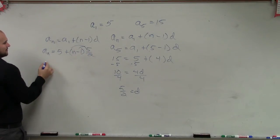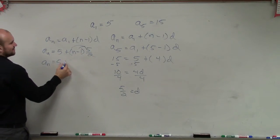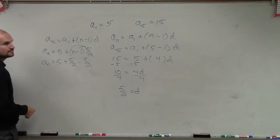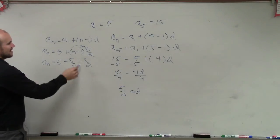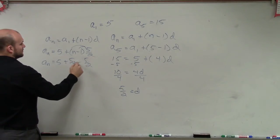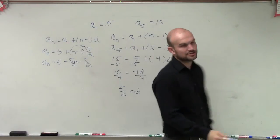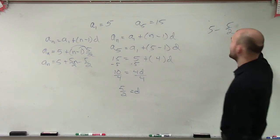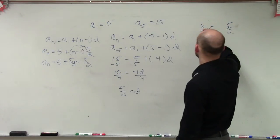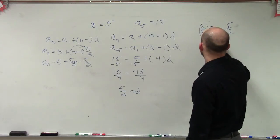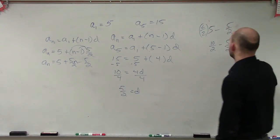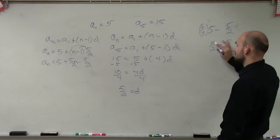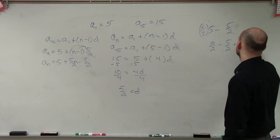Now we apply the distributive property. Basically, a sub n equals 5 plus 5 halves n minus 5 halves. So now we need to combine like terms, so we do 5 minus 5 halves. Well remember, we need to have common denominators. So I multiply by 2 over 2, and I get 10 halves minus 5 halves, which equals 5 halves.